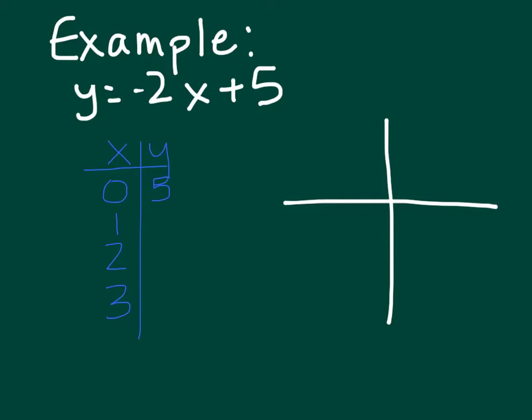Then I'm going to continue to plug in my values. So if x is 1, negative 2 times 1 is negative 2, plus 5 is 3. If x is 2, negative 2 times 2 is negative 4, plus 5 is 1. If x is 3, negative 2 times 3 is negative 6, plus 5 is negative 1.